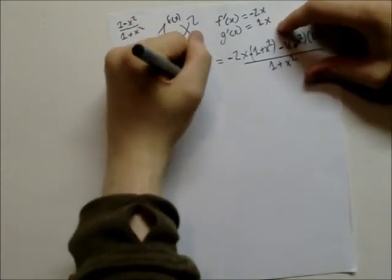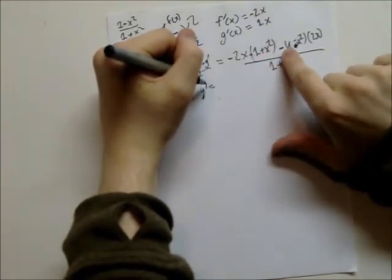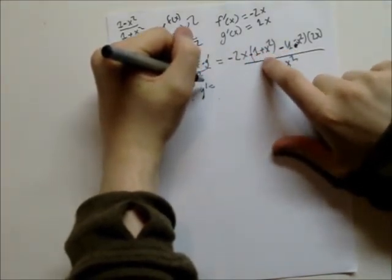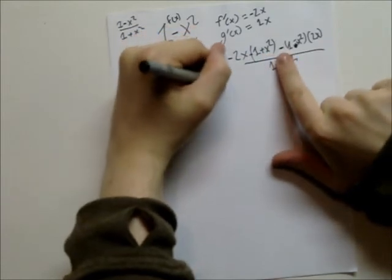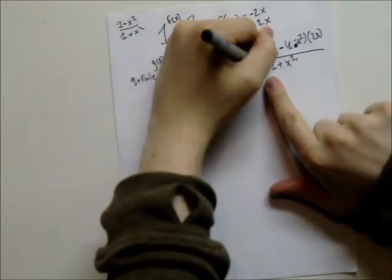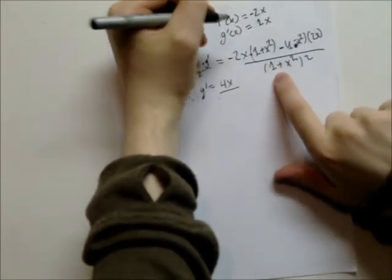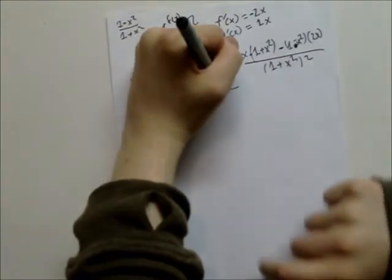So, y prime equals, okay, so that'd be, that's 4x over, and oh yeah, this right here is squared. You've got to remember that. You would not forget that sometimes. You lose easy marks for that.